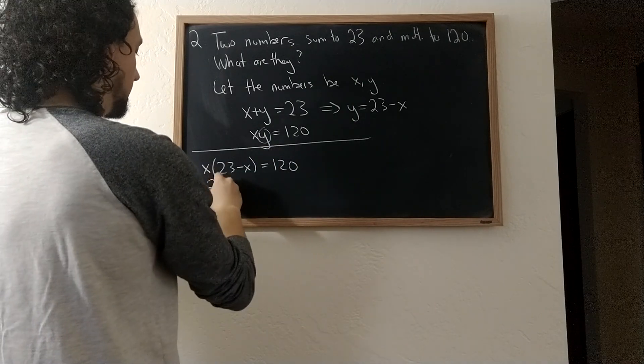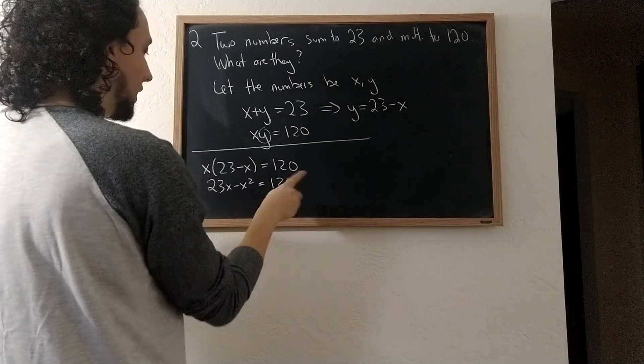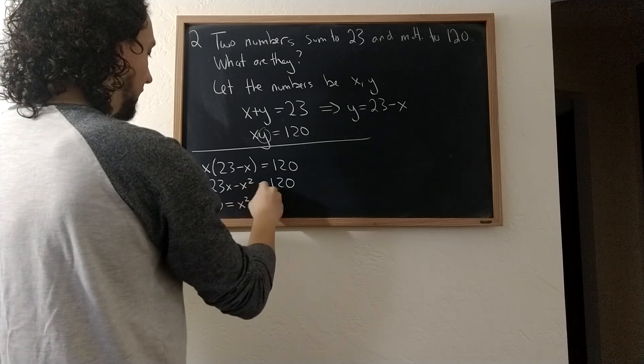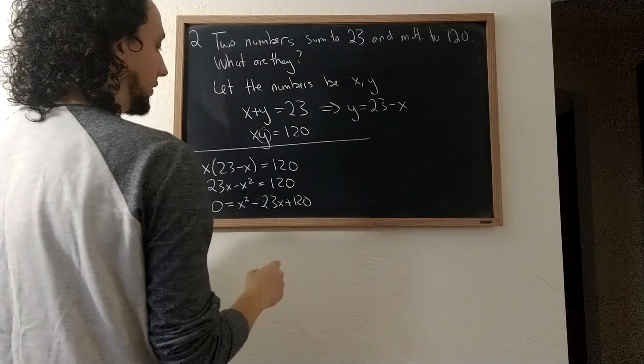Which gives me 23x minus x squared equals 120. Which if I rearrange things gives me 0 equals x squared minus 23x plus 120.